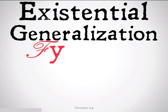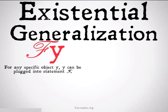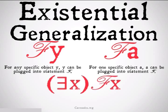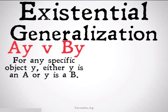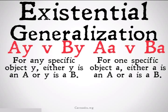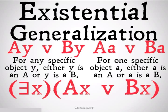Finally, we have existential generalization. We take either FY for any specific object Y, or FA for one specific object A, and conclude there exists an X such that X can be plugged into statement F. For example, from 'AY or BY' — either Y is an A or Y is a B — or from 'AA or AB' — either A is an A or A is a B — we can conclude there exists some X such that X is an A or X is a B. We can reach that conclusion from either of those two previous statements.